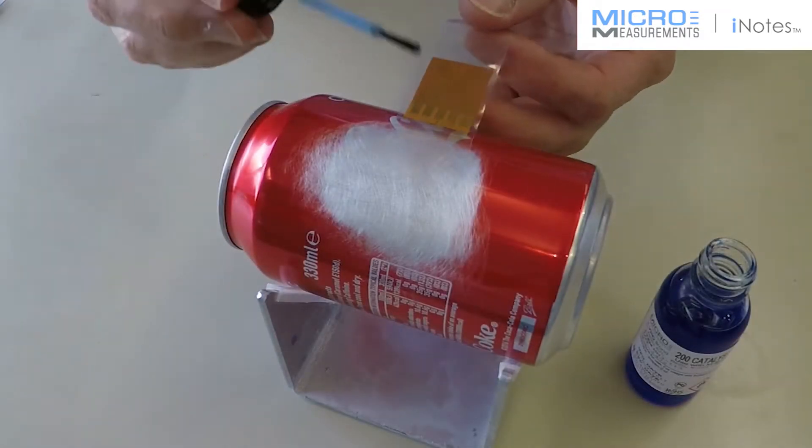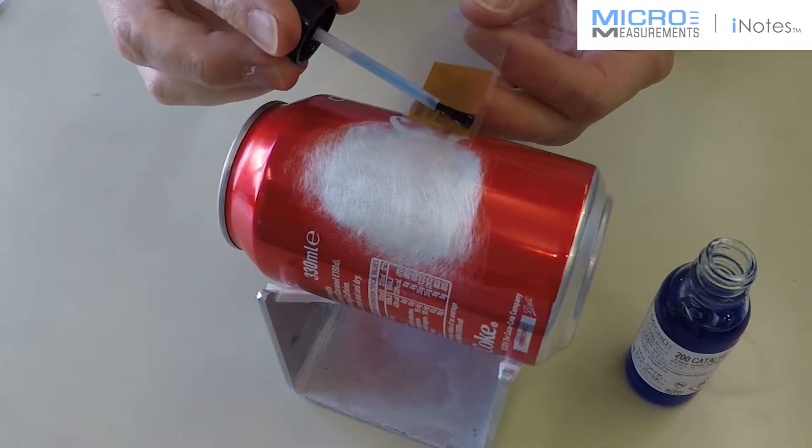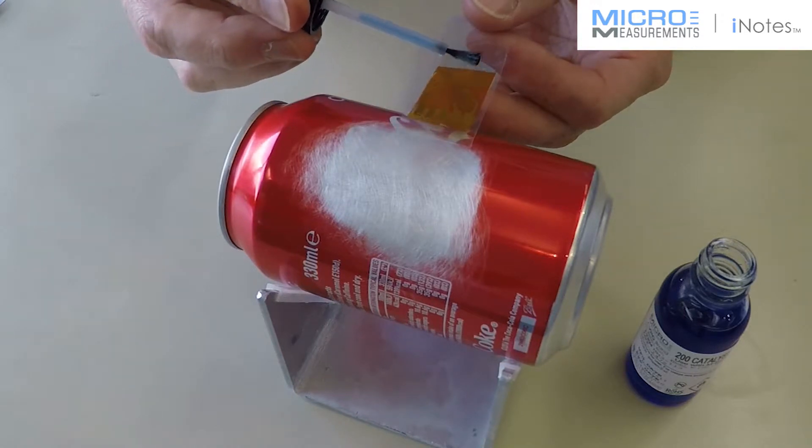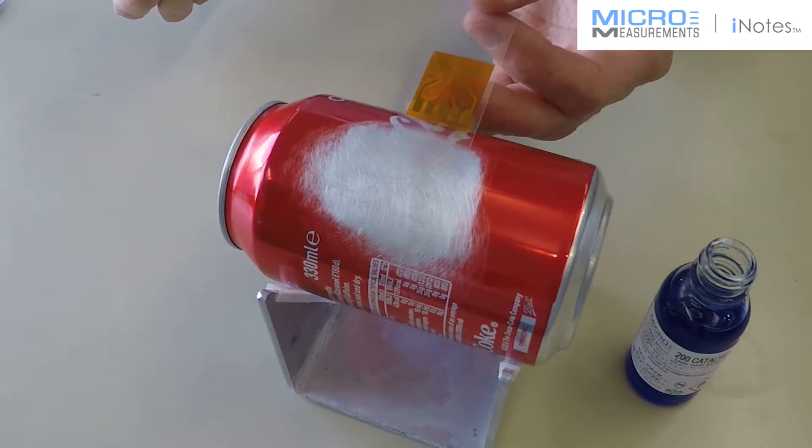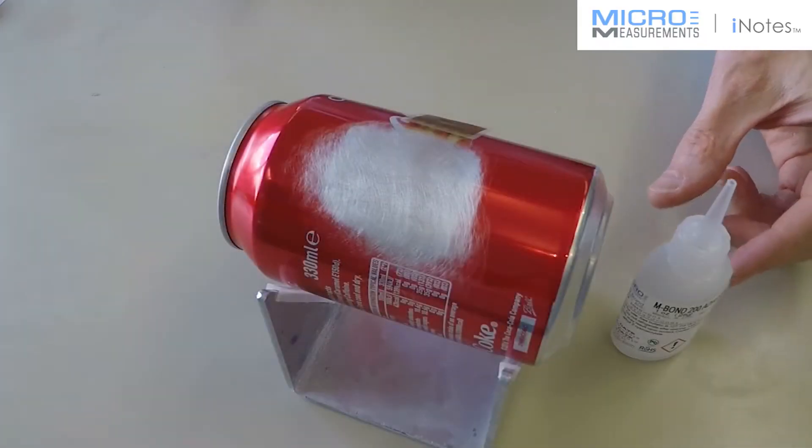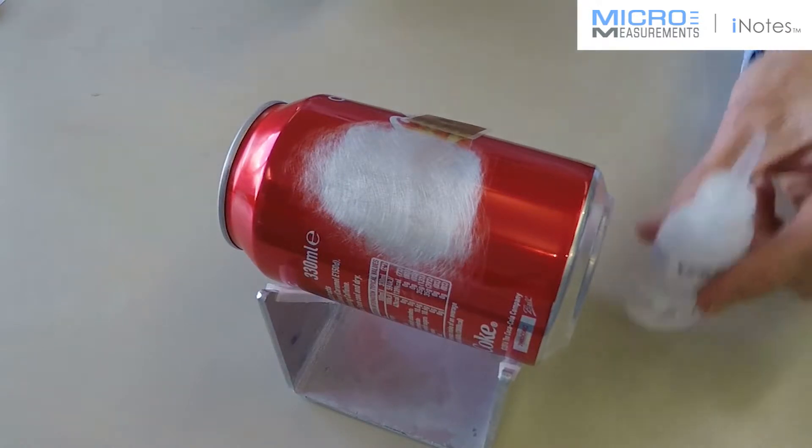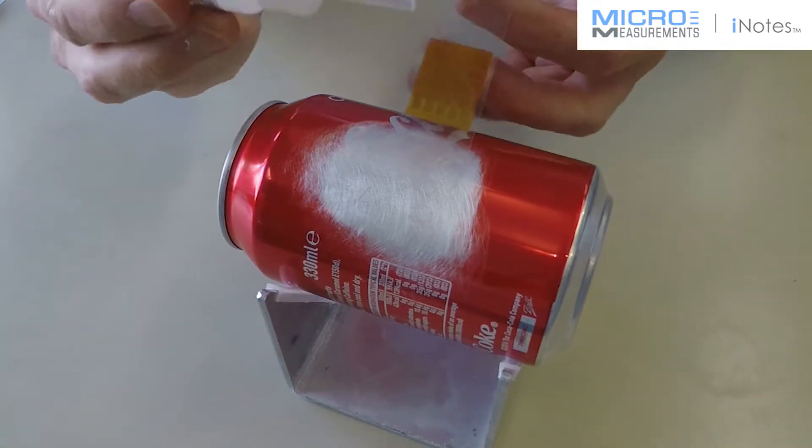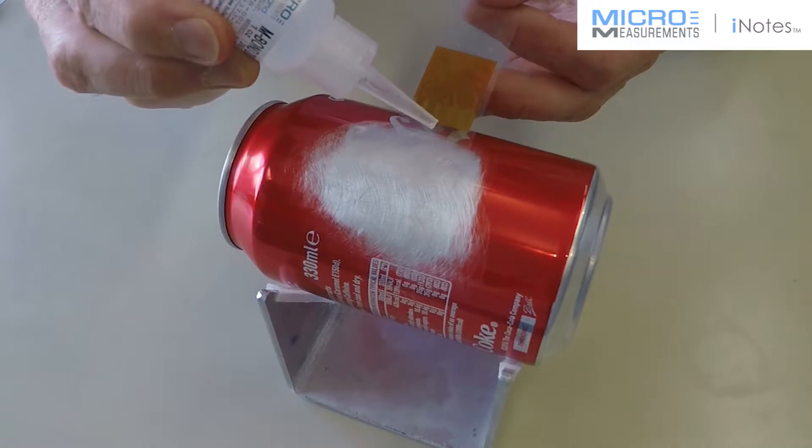I'm going to apply M-Bond 200 catalyst to the back of the gauge in a sweeping action. And then allow that to dry for a few seconds. I'm going to take the M-Bond 200 adhesive and I'm going to apply a single drop where the tape meets the surface. There we go, one drop.